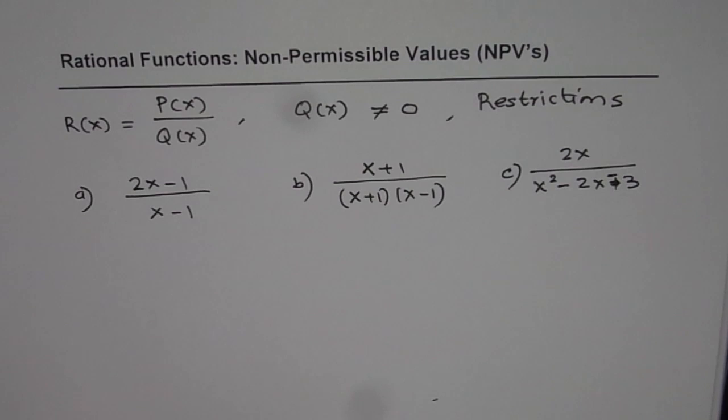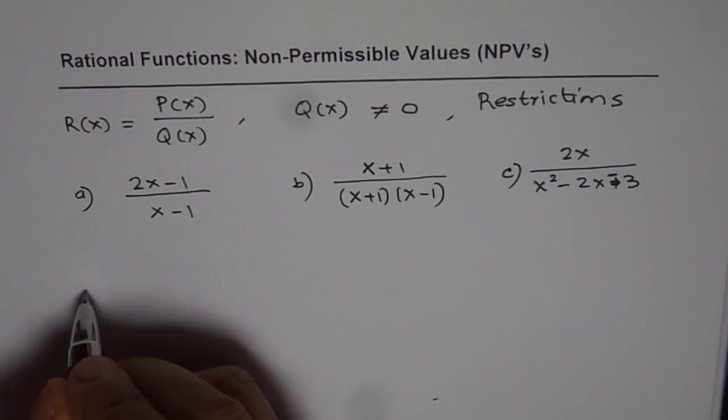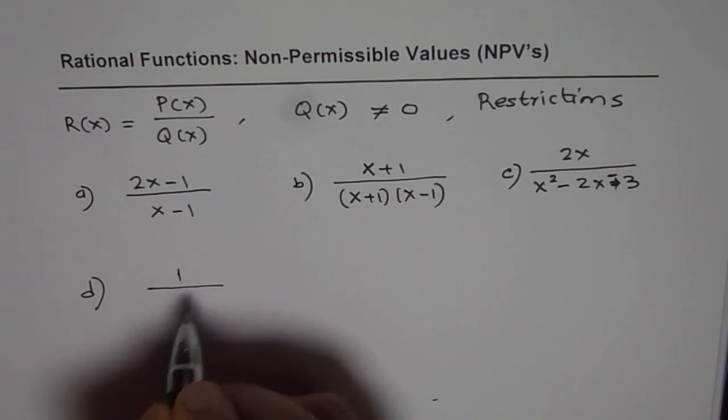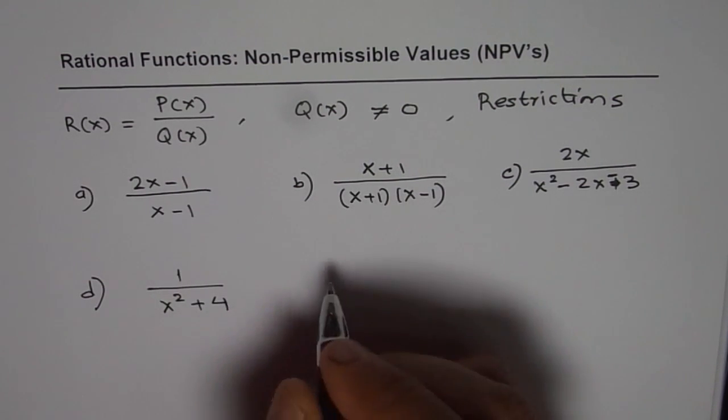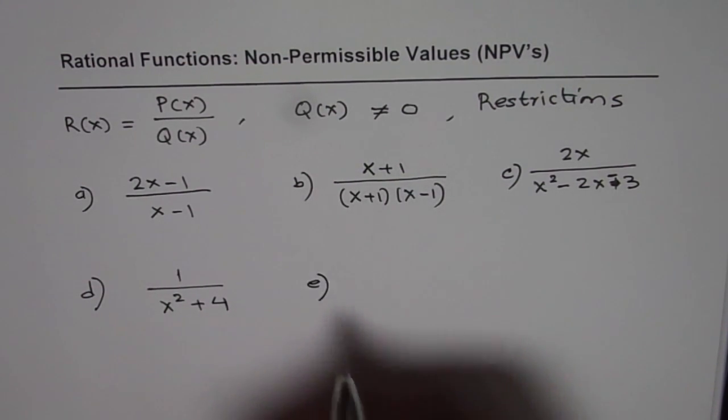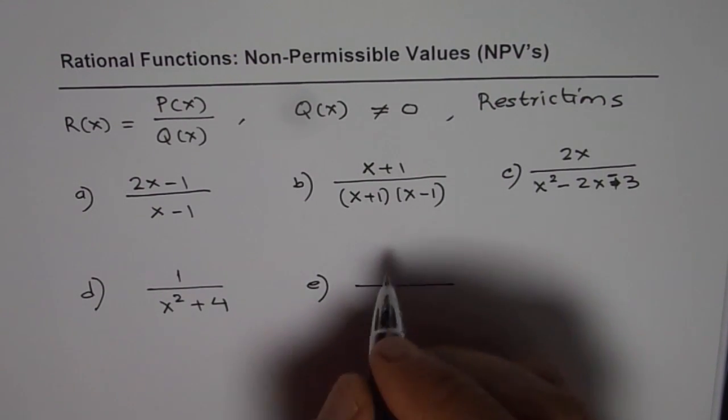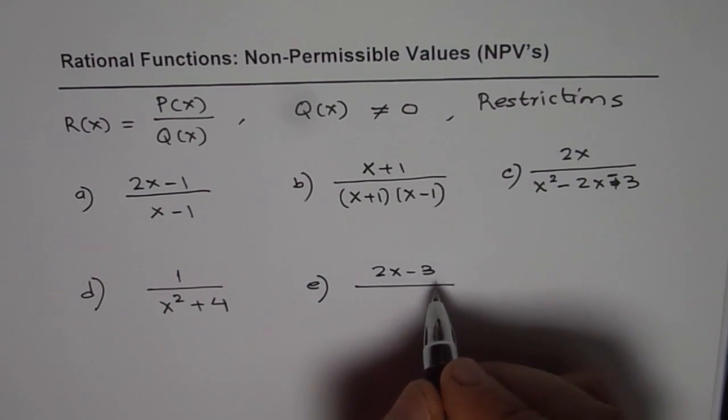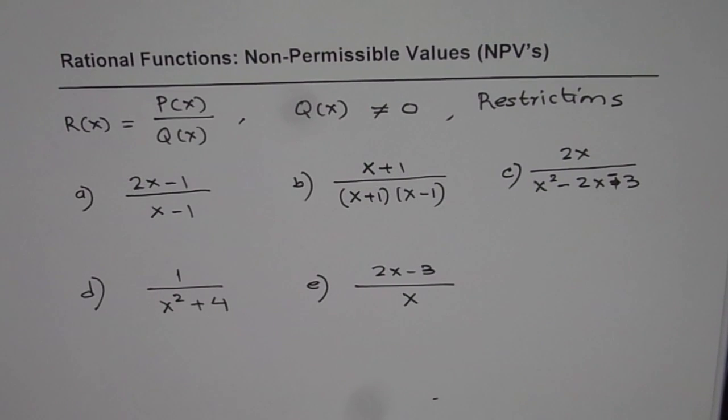For part D, I will give you an equation as 1 over x squared plus 4, and then E, let the equation be 2x minus 3 over x. These are good enough.